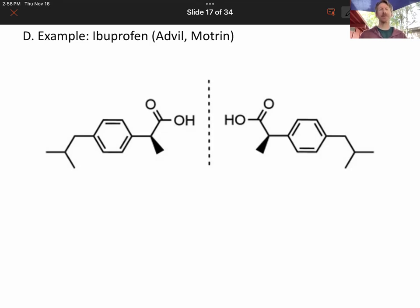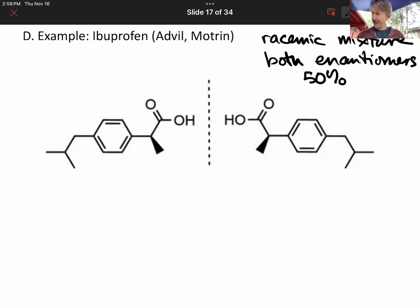This is ibuprofen. And interestingly, ibuprofen is sold as both of these enantiomers, both of these chiral compounds sold together. And that's actually called a racemic mixture, when you have both enantiomers or both chiral compounds, 50%, 50%. And what we're here to do is find the chiral center. That's definitely something you're going to have to do on the homework.